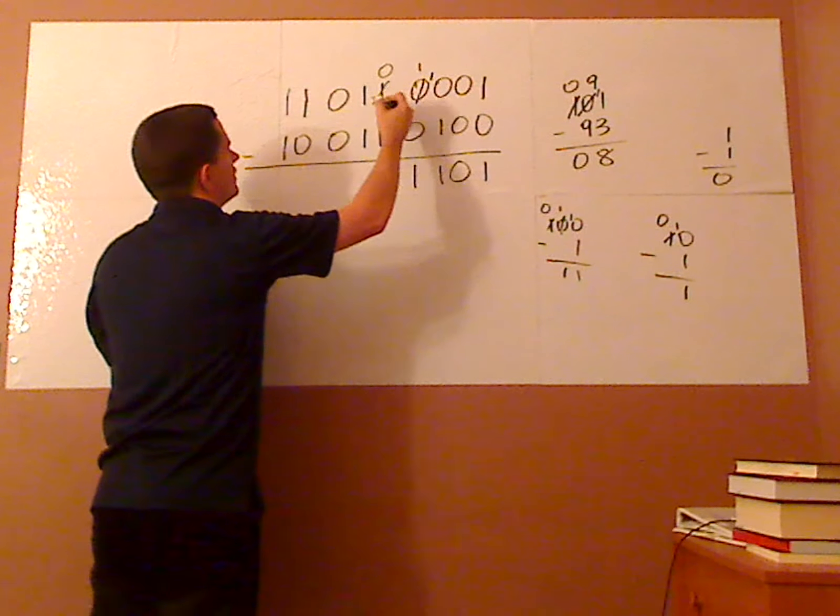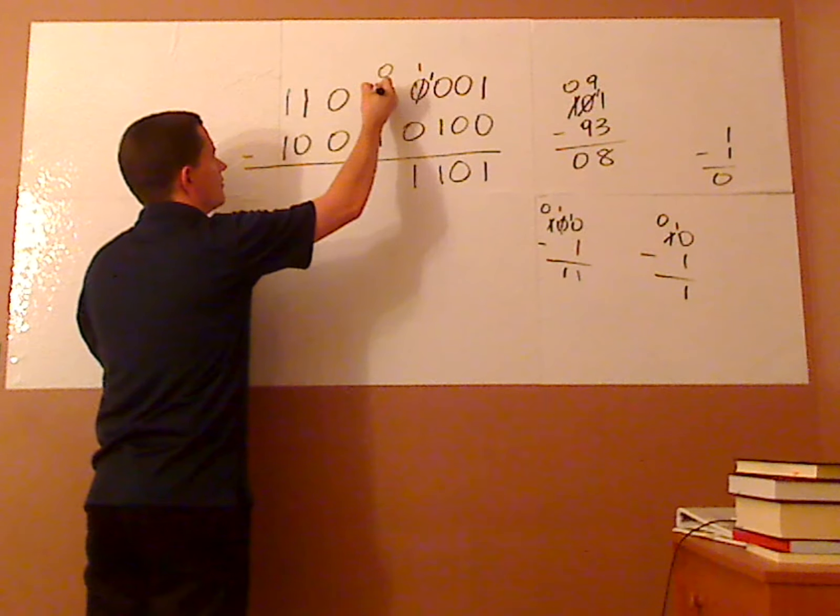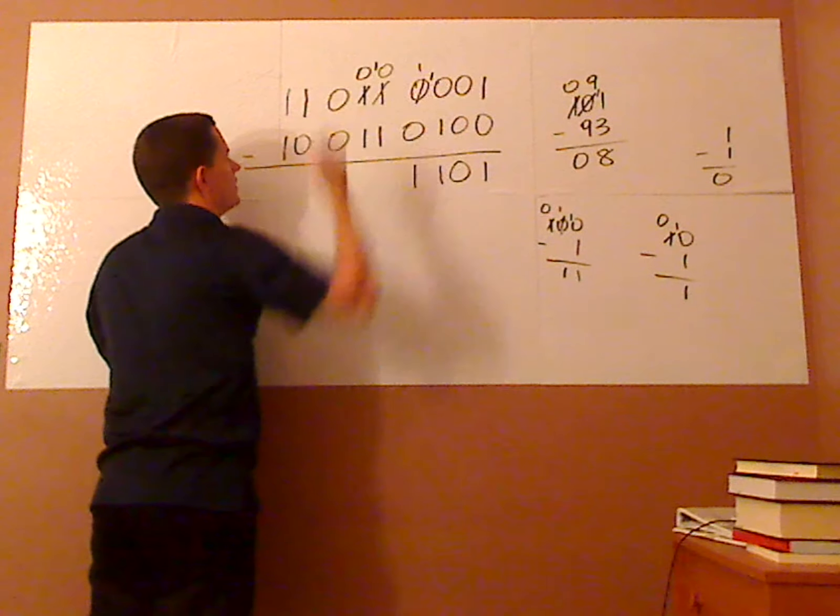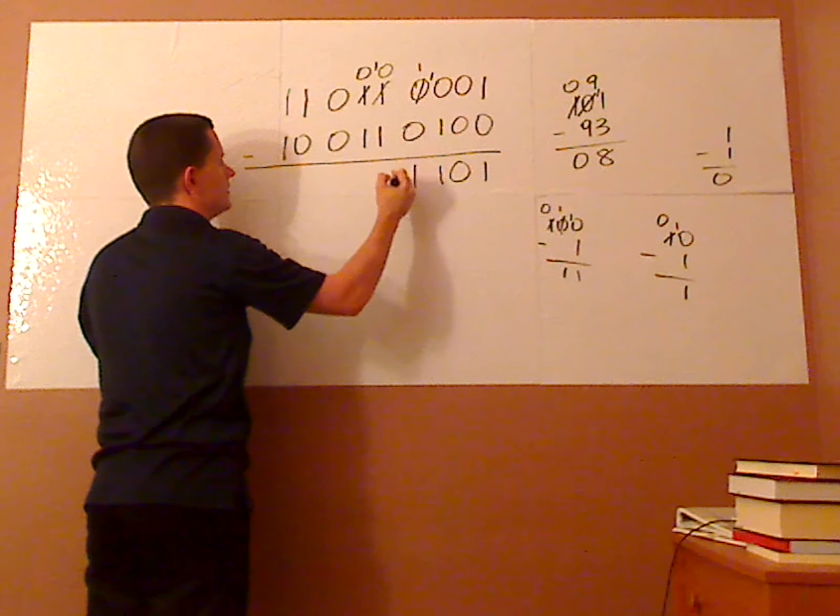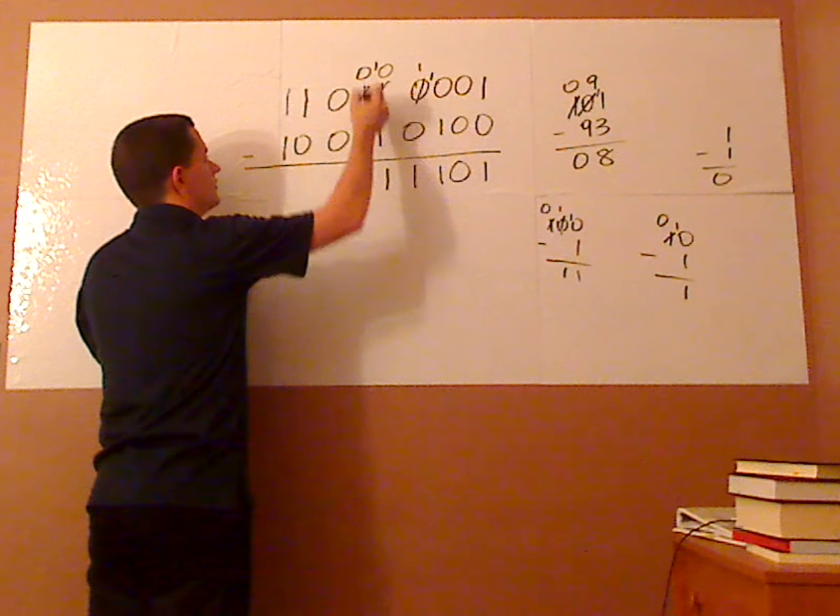Then I have 0 minus 1, can't do that, so I have to borrow. This becomes 0, and that becomes a 10. Again, 10 minus 1 is 1.